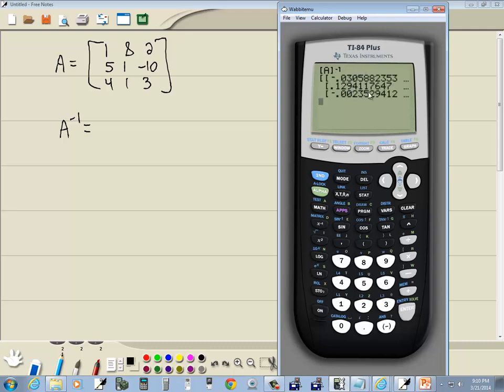Now it gives us decimals, and you see these three little dots there. It means you can scroll over and see the rest of it. So we can right arrow over and see more of our matrix. But we don't want decimals. So I'm just going to do a math, enter, enter, change it to fraction.